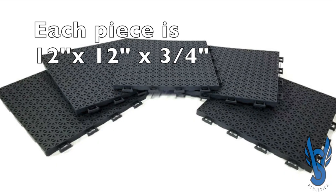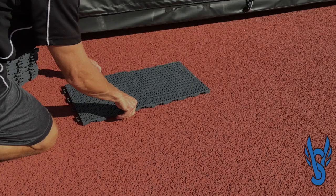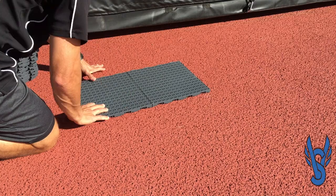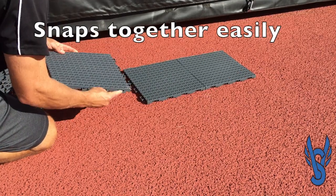The polymer platforms come in a neutral gray and are 12 inches by 12 inches. They easily snap together with just a little bit of pressure at each of the junction points.